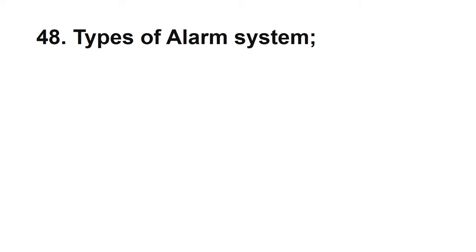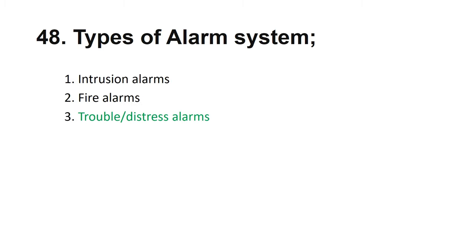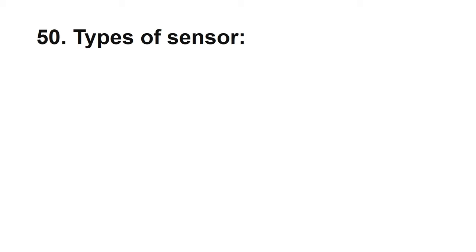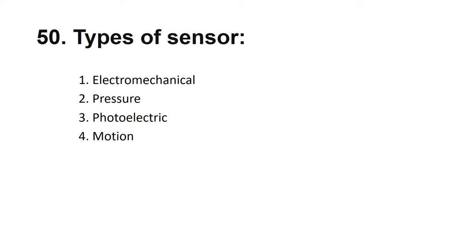Types of alarm systems: intrusion alarm, fire alarm, and trouble or distress alarm — there are three types. The alarm notification system can be local, central station, or remote. Local means inside the building; central station means the control room is notified; remote means people can receive information through the internet. Types of sensors used to protect property or people: electromechanical, pressure, photoelectric, and motion.